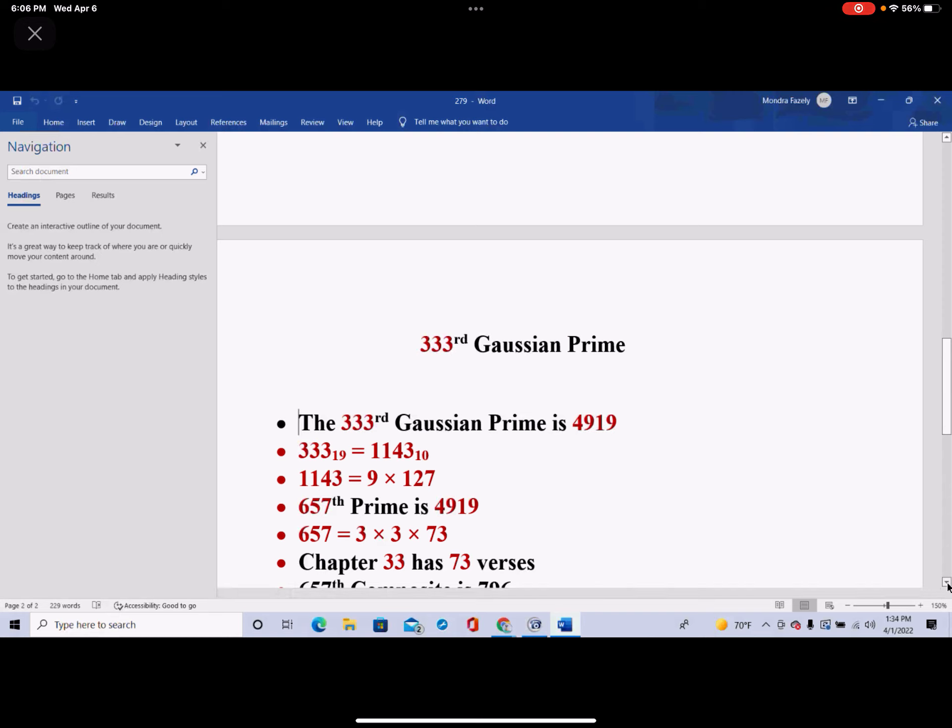So with this, 4919 actually generated two disparate surahs, namely 9 and 33. And told us that 9 has 127 verses, and 33 has 73 verses.